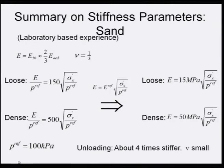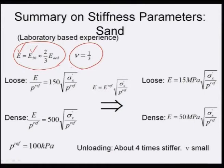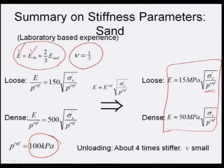Summary on stiffness parameters for sand from laboratory-based experience: E equals E50, which equals two-thirds of E_oedometer, and mu equals one-third. For loose sand, E50 equals 15 MPa times (sigma-x-prime / p-reference), where p-reference is 100 kPa. Correlations are also given for dense sand. During unloading, the soil is about four times stiffer and mu is very small.